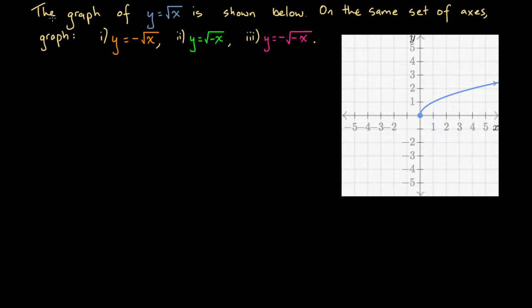Welcome to a presentation on reflecting graphs in the x and y axes, and also rotating graphs around the origin. In order to illustrate this concept, we're going to consider this question: the graph of y equals the square root of x, shown in blue below. On the same set of axes, graph the following functions: y equals minus square root of x, y equals the square root of minus x, and y equals minus the square root of minus x.